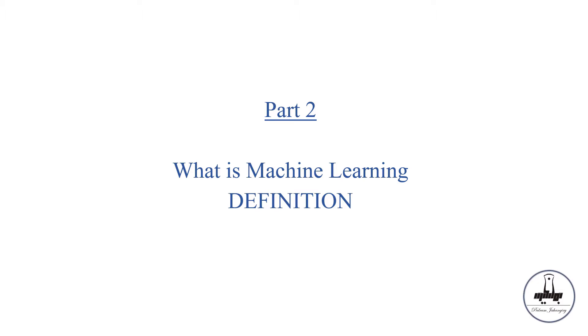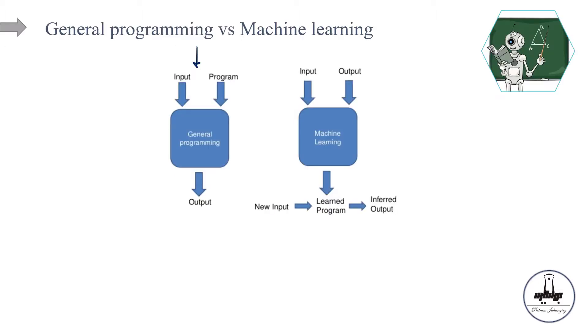Before that, however, we need to know the difference between general programming and machine learning. In general programming, we humans specifically tell the computer what to do. For example, we tell the computer: take x as your input, and then we specifically tell the computer what the program is. We might say: add number three to x and then multiply it by two. At the end of the day, this program is a known function—for example, (x + 3) × 2. This function is known.